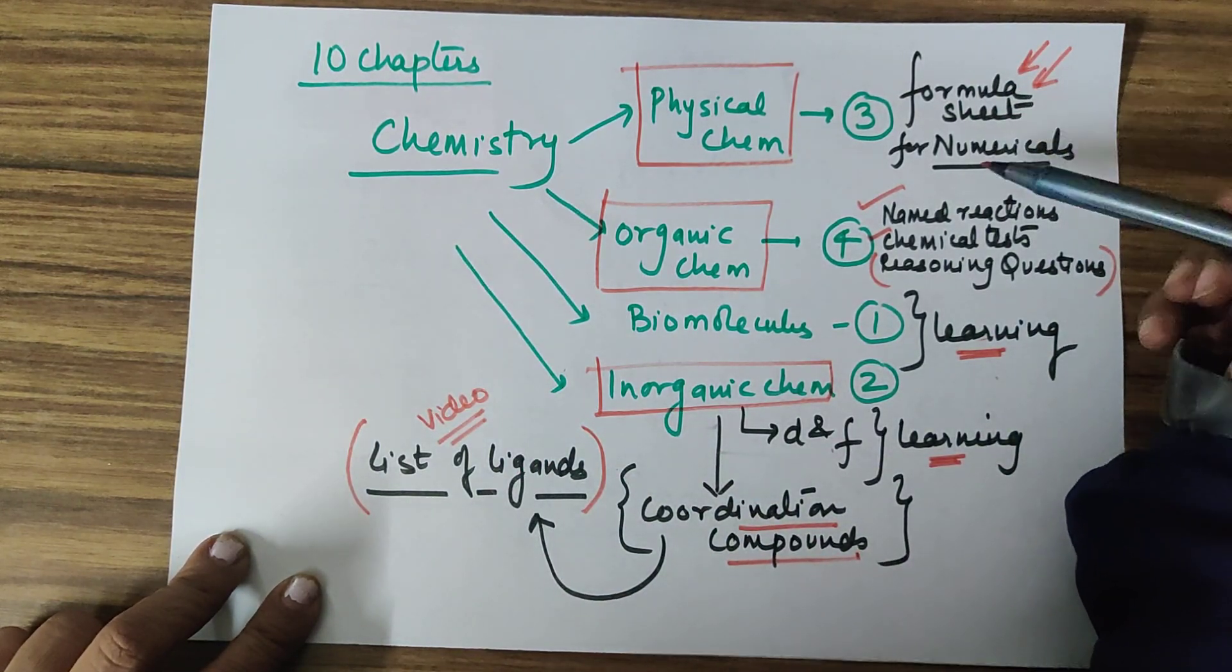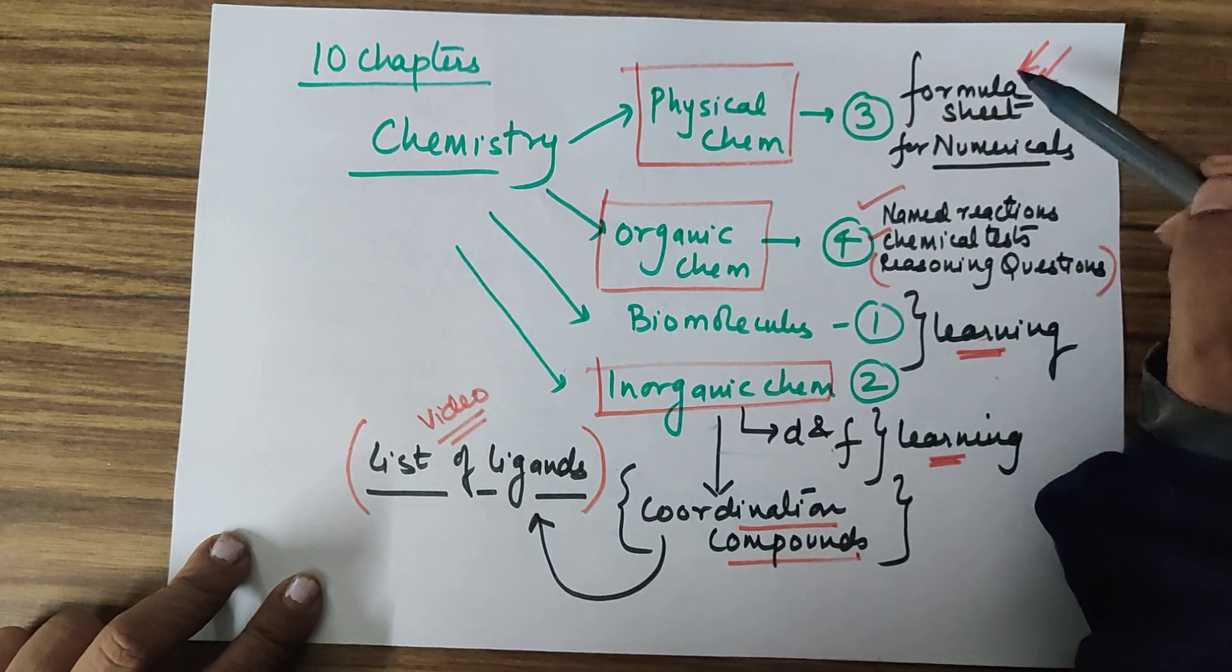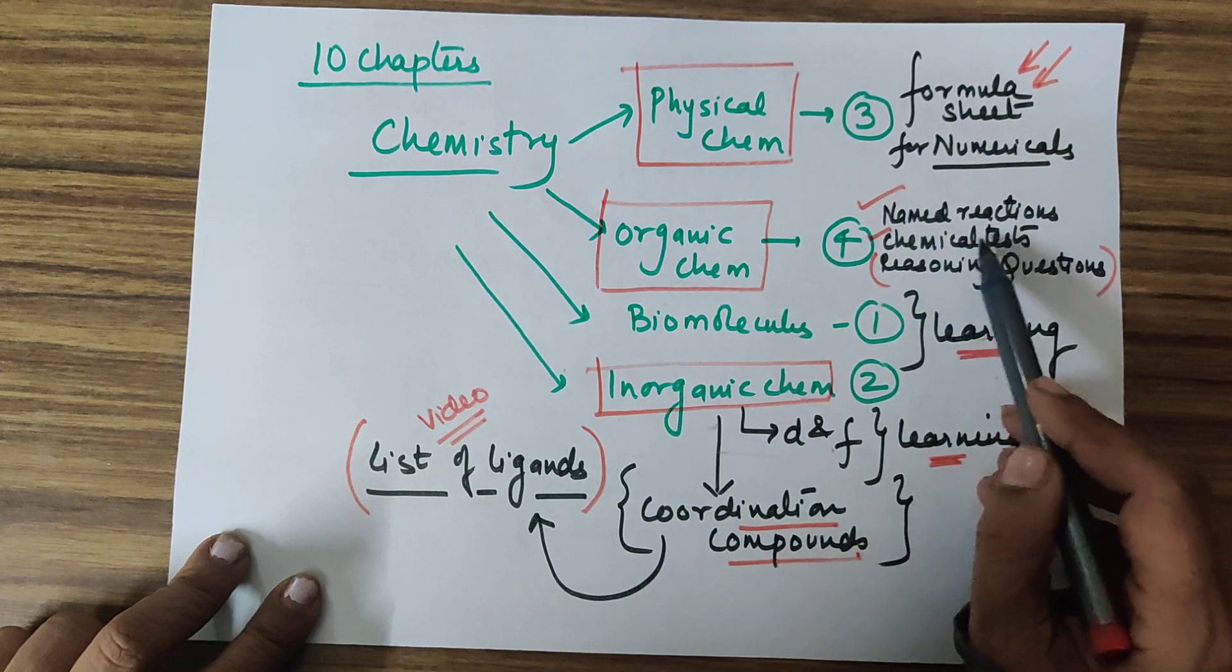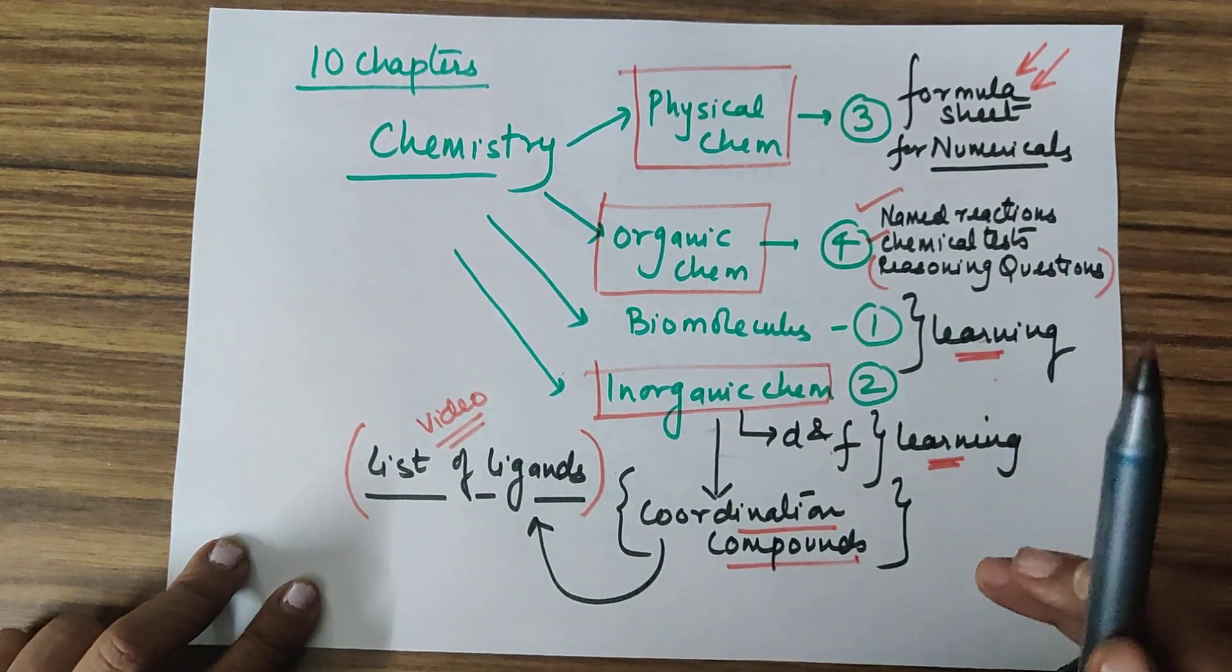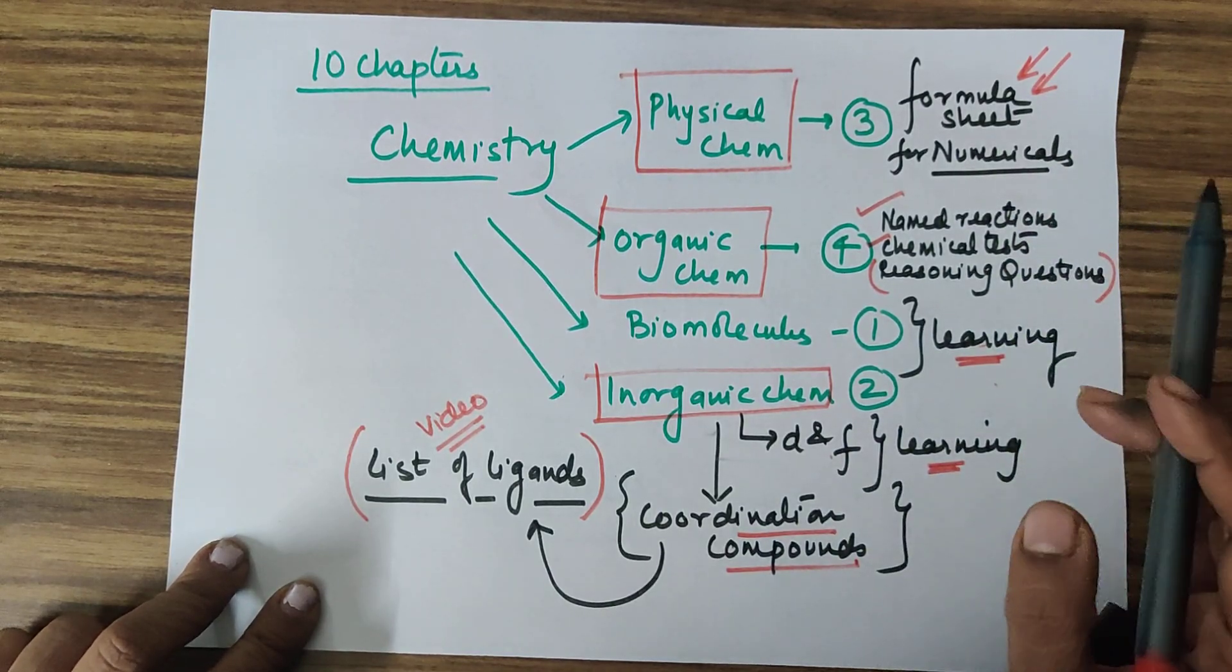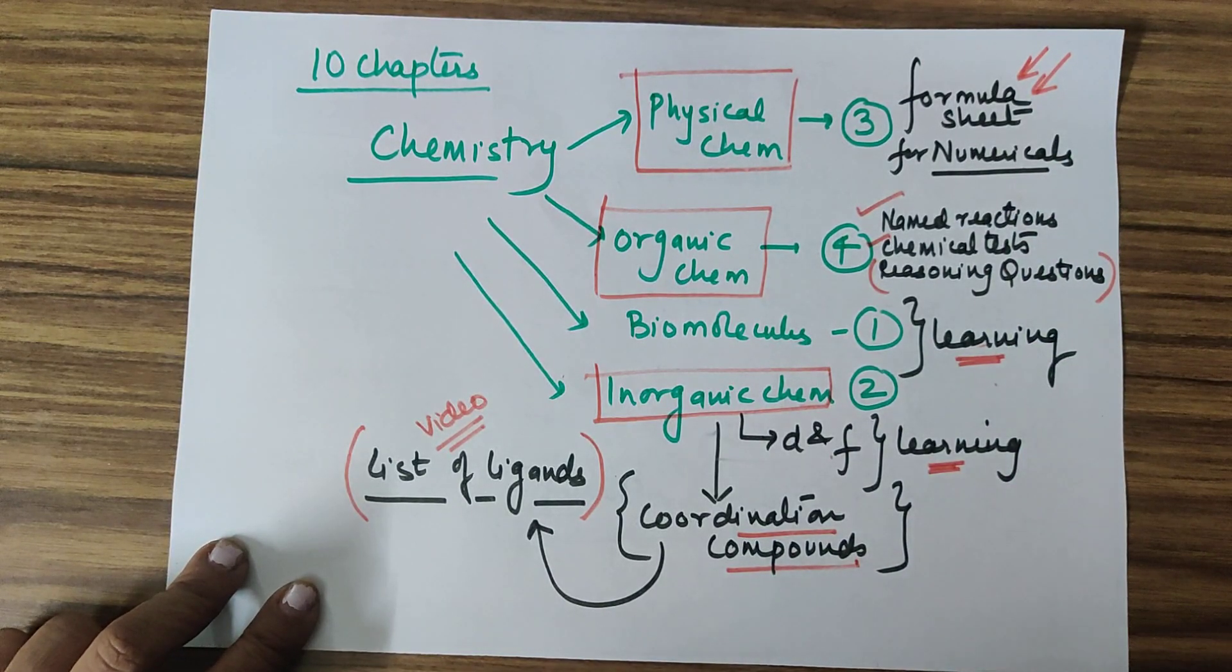Whenever you do the numerical chapters, then you will put a formula sheet on the study table. If you do the organic sheets, then you will put a name of the chemical sheets. So you will put a sheet on the list. So after 3 days, it will not become very difficult.